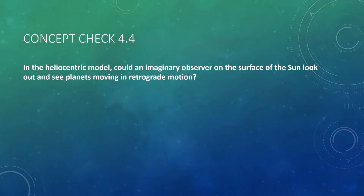Here's our first concept check. I'll ask you the question, then pause for a couple seconds so you can pause the video and think about it. In the heliocentric model, could an imaginary observer on the surface of the Sun look out and see planets moving in retrograde motion? Pause your video now and think about it, then come back when you're ready.